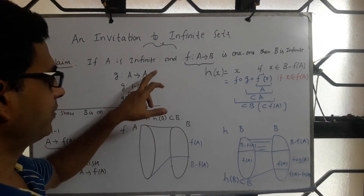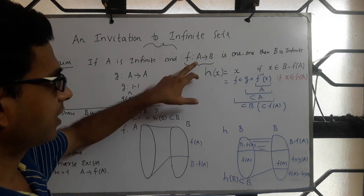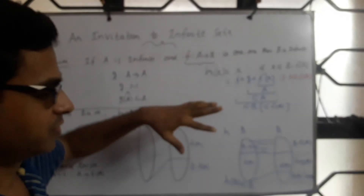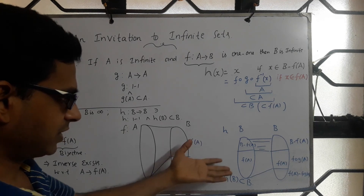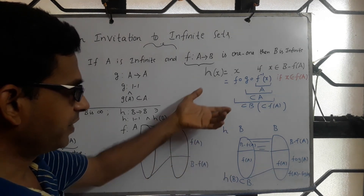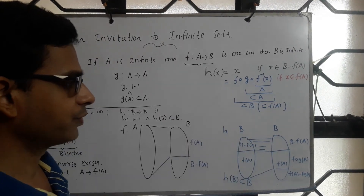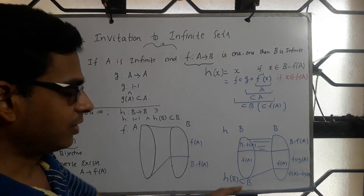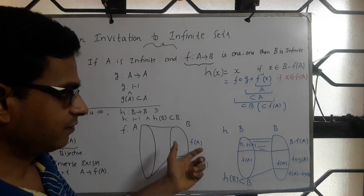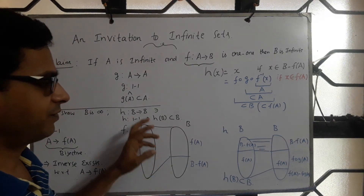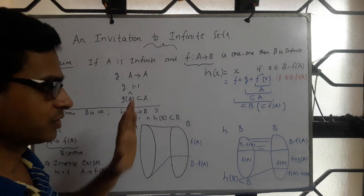We have seen two different proofs. One proof says: A is infinite, f is 1-to-1, so f(A) is infinite, and since f(A) is a subset of B, B is also infinite. There is one more way of proving this, which is what we have done now — but this gives an explicit map showing where each element in B is mapped to within B, and what part of B has no preimage with respect to this map. We shall now see a couple of case studies or applications making use of these results.